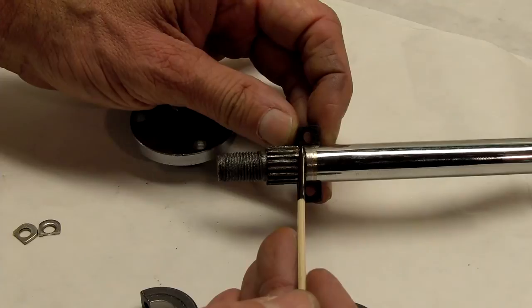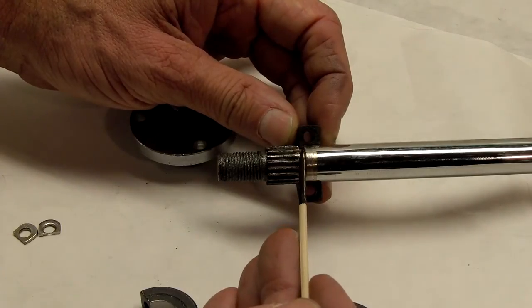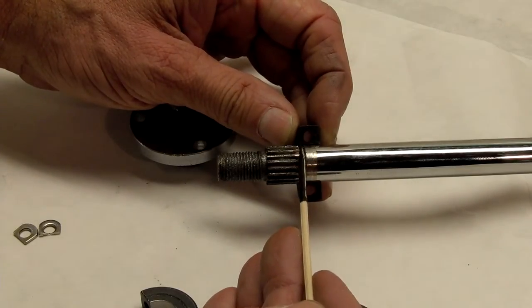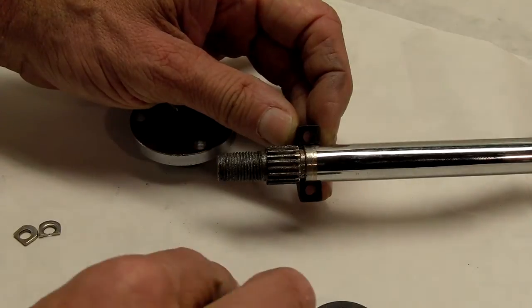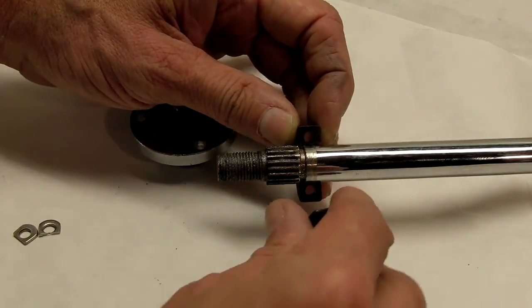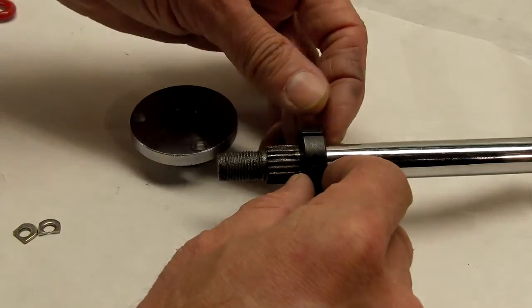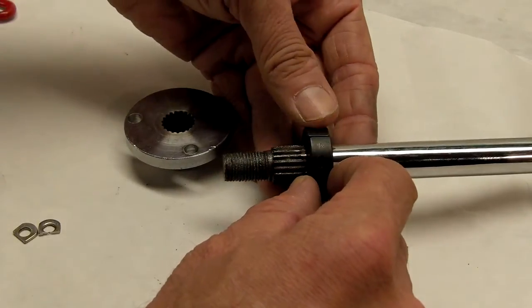That way, now when you tighten this clamp down, it can't slide down the shaft because it's locked into this slot. And that'll help keep this hub tight on the shaft.